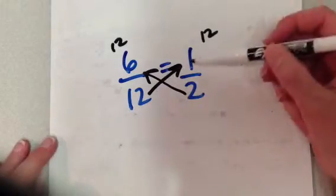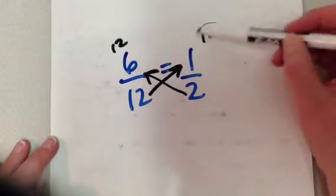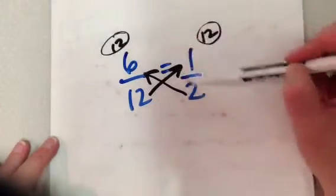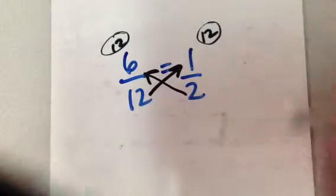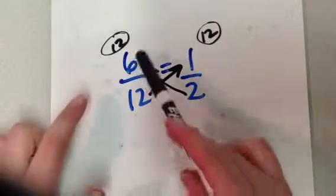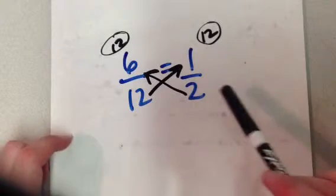And in this case, they are. So I could say, you know, I come up with the same number. Right here, 6 times 2 is 12, 12 times 1 is 12. So I could say that 6/12 is equivalent to 1/2.